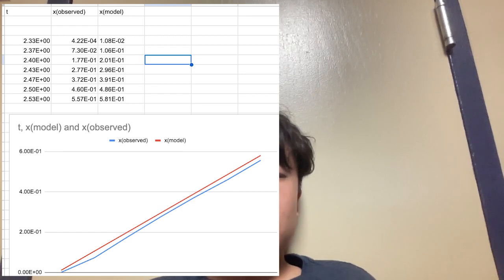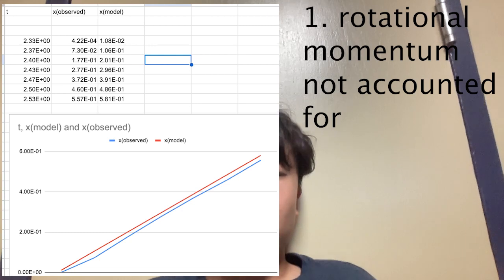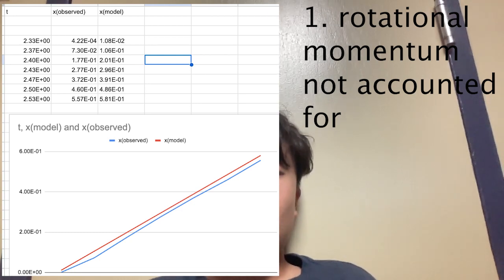This inaccuracy may be explained by two reasons. First, rotational momentum was not accounted for in the model data for both balls, only translational momentum.